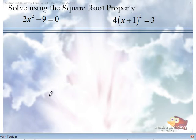Step one, isolate the perfect square. So this first one, we have to add 9 to both sides and then divide by 2. So isolate the perfect square. Check.